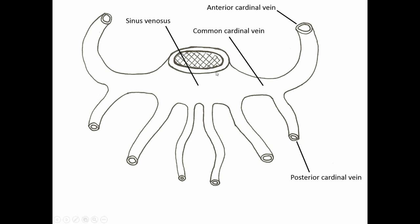From here the sinus venosus would move the blood into the primitive atrium, but I've sliced off the atrium leaving us the sinus venosus right here. A couple other veins on each side are draining in. We have the umbilical veins coming from the placenta — early on there are two — and the vitelline veins which are draining blood from the yolk sac. So vitelline vein equals yolk sac drainage whereas umbilical veins are connected to the placenta.